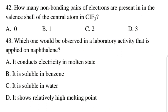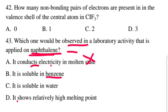Question number 43: Which one would be observed in the laboratory activity that is applied on naphthalene? A: it conducts electricity in molten state. B: it is soluble in benzene. C: it is soluble in water. D: it shows a relatively high melting point. Naphthalene is a nonpolar molecule, so it does not conduct electricity in molten state. Naphthalene is non-polar and benzene is also non-polar — like dissolves like principle — so naphthalene is soluble in benzene.